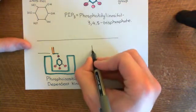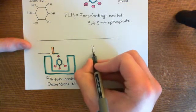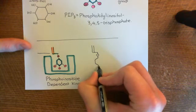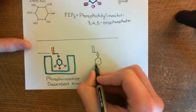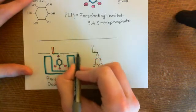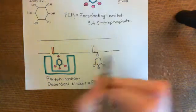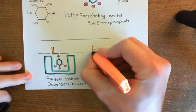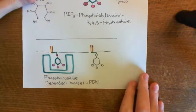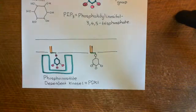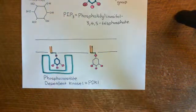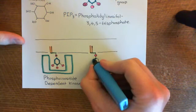PIP3 is also going to recruit another enzyme to the phospholipid bilayer, but this time it's not going to activate this one. Here is another molecule of PIP3 with the free phosphate groups coming off the inositol ring. I'll colour it in again — the long-chain carboxylic acids, the glycerol molecule in green, the four phosphate groups in pink, and the inositol ring in blue.